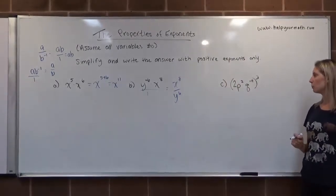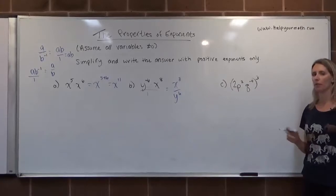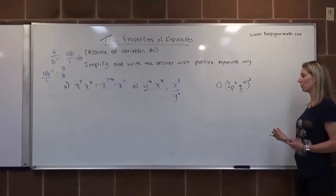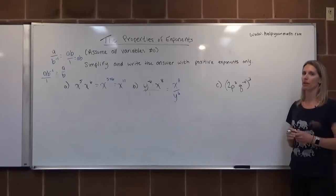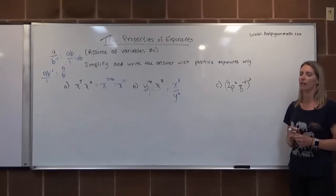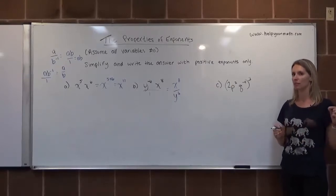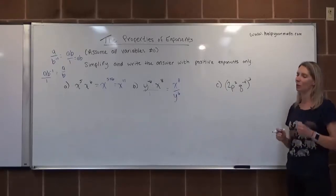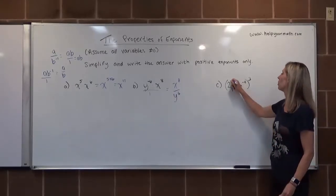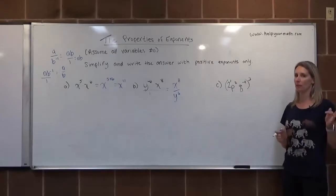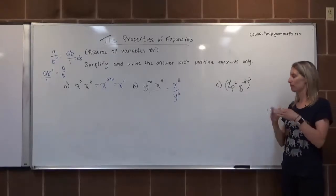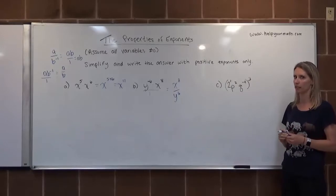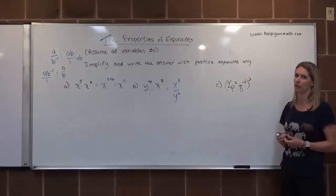For letter C, we have 2p squared q to the negative 4th, that whole quantity cubed. We want to be really careful — a lot of people think that numbers are not factors, but they are their own separate factors. 2 is its own separate entity with its own exponent of 1. Don't forget to distribute exponents to numbers, and don't make the numbers feel left out.